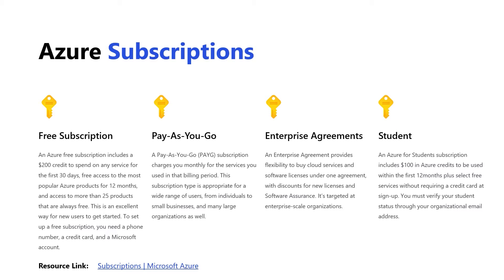After the free subscription, the next option is the pay-as-you-go subscription. The way this one works is you're basically billed monthly for the services that you use in that billing period.